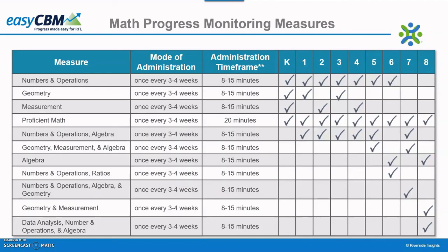For students scoring below the 50th percentile on a benchmark assessment and thus needing a math progress monitoring probe, there are 10 probes per skill per grade level from which to choose. Each probe is a shorter assessment than the benchmark but includes a comprehensive set of grade-level standards for the specified skill. Like the reading probes, all math progress monitoring probes are parallel in difficulty, so students can continue to practice the same skill several times before the next benchmark administration. For students needing progress monitoring in multiple areas of math skills, the student can focus on one measure at a time, transitioning to the next measure type after all 10 probes are complete. Another option is for the student to rotate through the different measures so that each measure gets tested every 4 weeks. The recommended time frame for each math probe is 15–20 minutes, and assessments should be administered no sooner than every 3–4 weeks, since it takes time for the student to learn the skill before growth will be evident through an assessment.